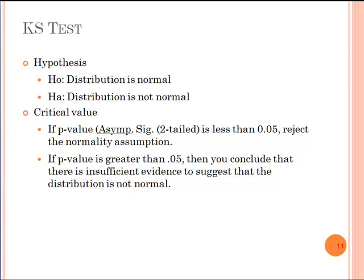The null hypothesis is that the distribution is normal and the alternative hypothesis is that the distribution of the underlying variable is not normal. If the asymptotic significance value is less than 0.05 then you reject the normality assumption. If it's greater than 0.05 then you fail to reject the normality assumption. If the P value is less than 0.05 you reject the normality assumption.